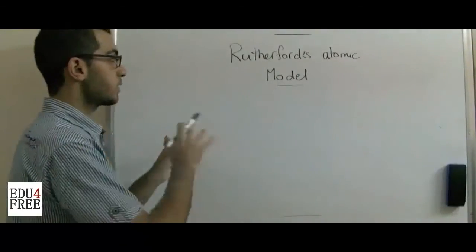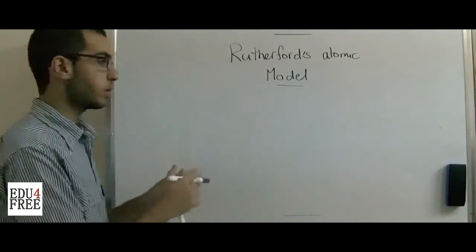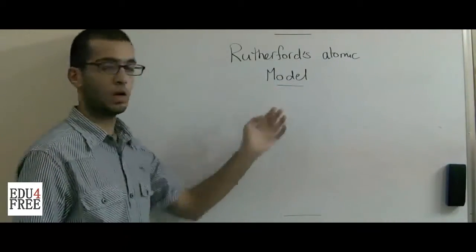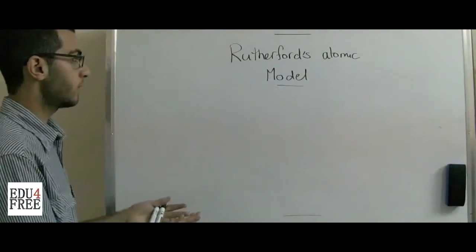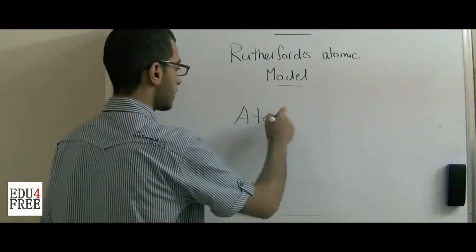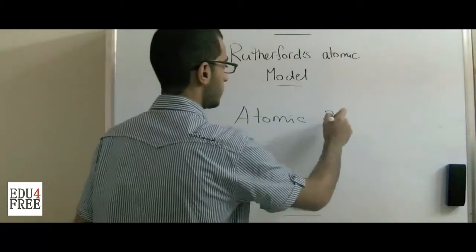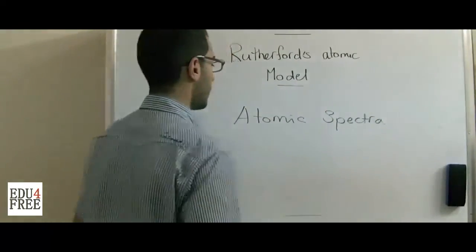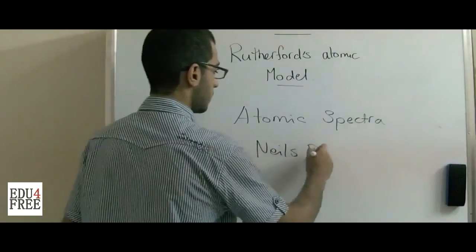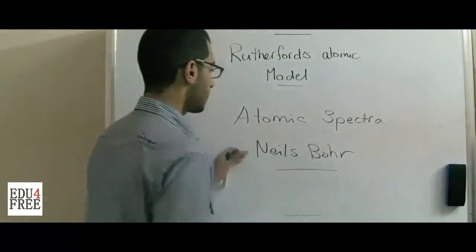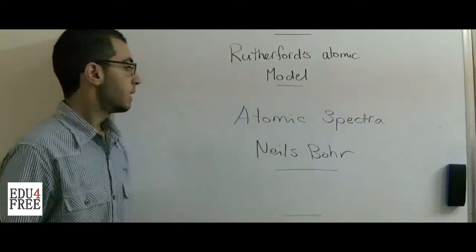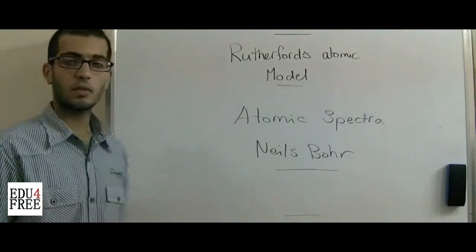That was the contradiction between the classical Newtonian mechanical laws and Rutherford's atomic model. We will know the explanation for this next time, as we will talk about something called the atomic spectra, explained by a scientist called Niels Bohr. He will explain how the electron emits radiation and at the same time its orbit doesn't decrease. Until then, thank you for watching — see you in the next one.